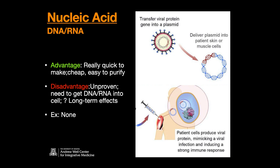The advantage of nucleic acid vaccines is they are really quick to make. As soon as they sequenced the SARS-CoV-2 coronavirus, they were able to artificially synthesize the nucleic acid — it's cheap, easy to purify, and can be made in large quantities. The disadvantages are that it's unproven — it's never been done before on a large scale in humans, only in animals and veterinary practice. Also, the nucleic acids aren't that stable in solution and we need to get them into cells quickly. Finally, we don't know the long-term effects of nucleic acid vaccination, with no human examples to base claims on other than experimentally.